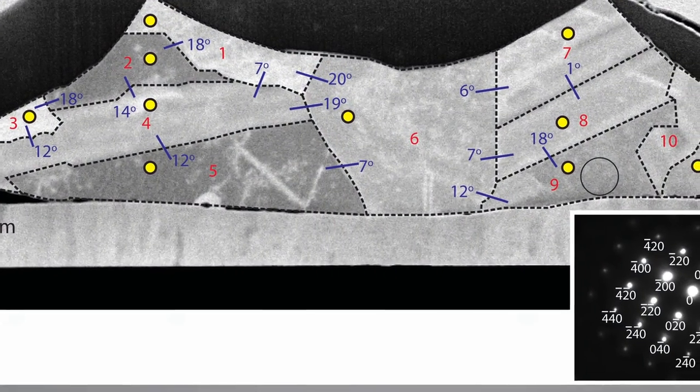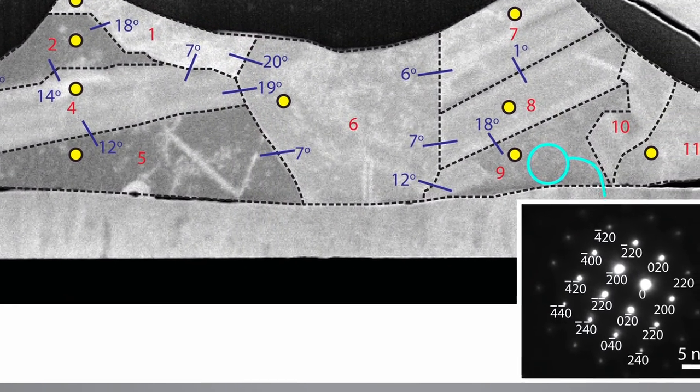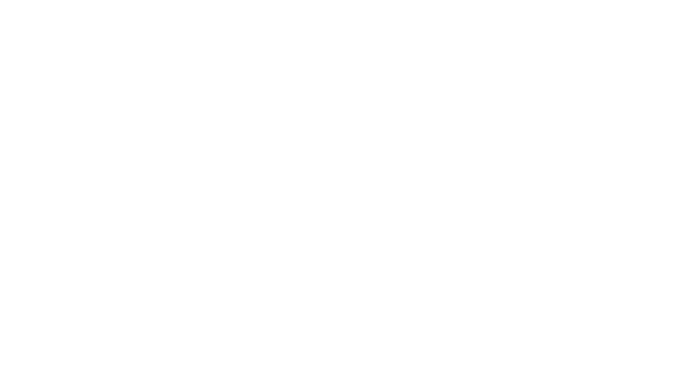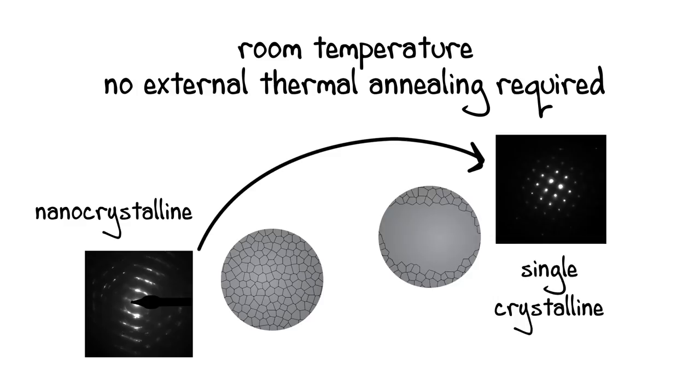After a month, the most deformed region displays the characteristics of a single crystalline material. Surprisingly, this occurs at room temperature without any external thermal annealing, revealing an interesting microstructural evolution path from nanocrystalline to single crystalline.